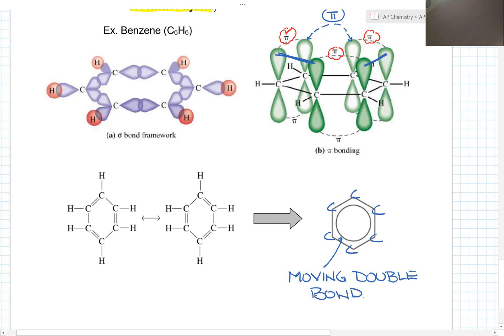Later on, when you're doing Biology 12 and talking about aromatics and organic chemistry, you'll see the benzene ring and you can understand why they draw it as a circle.